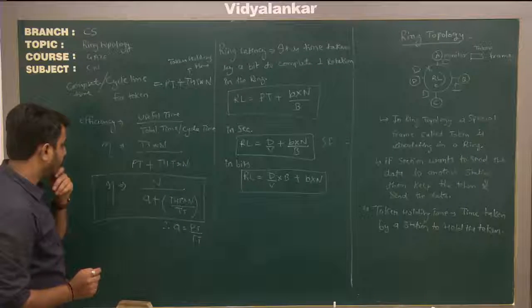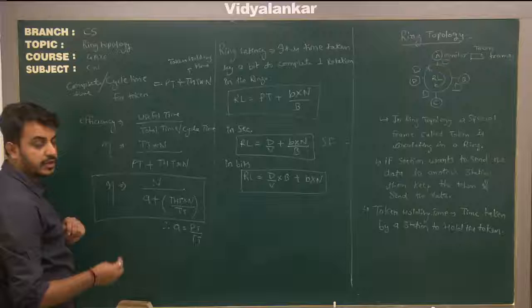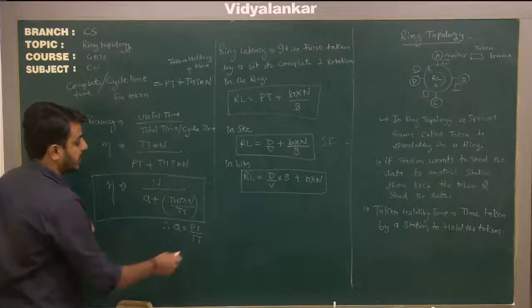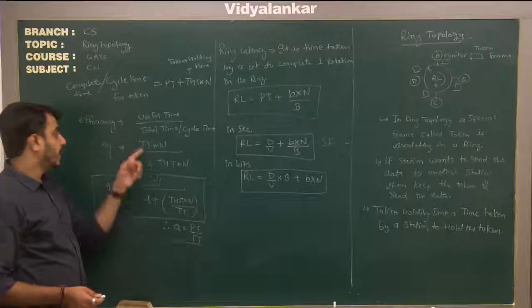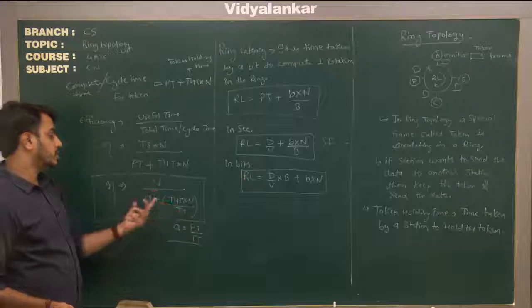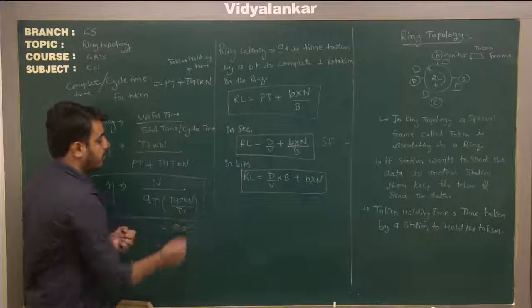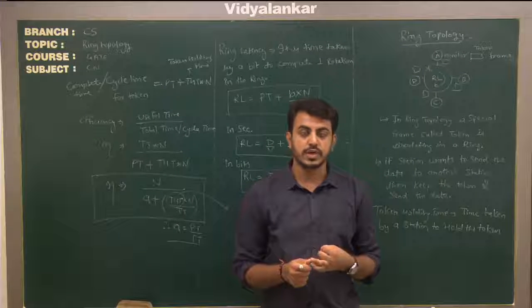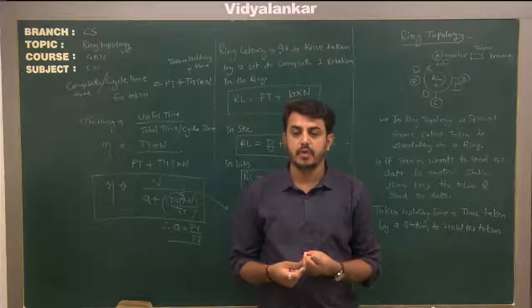Simplifying the efficiency formula: let a = PT divided by TT. Dividing numerator and denominator by TT gives efficiency = 1 divided by (a + token holding time × n divided by TT). The token holding time depends on whether we use early token release or delayed token release, which both affect the token holding time differently. In the next video, I will show you how to calculate token holding time. Thank you.